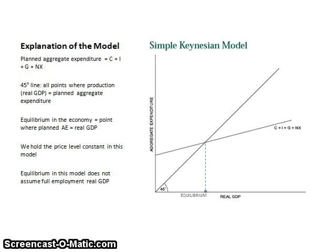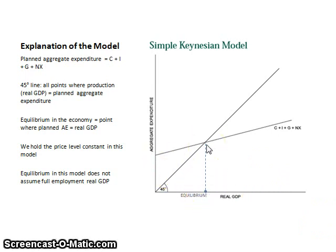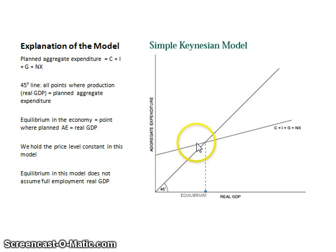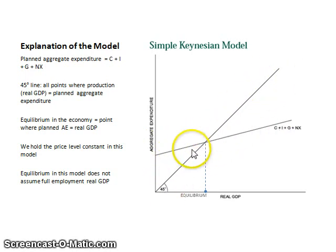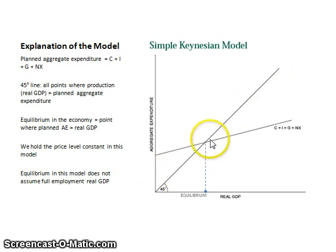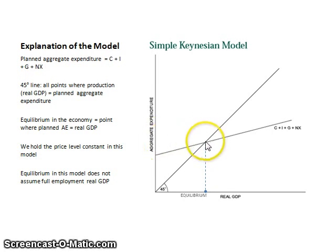The most important aspect of this simple Keynesian model is the idea of a Keynesian equilibrium, which occurs when our aggregate expenditure curve — the shallow line representing C plus I plus G plus NX — crosses our 45-degree line. This tells us that at that particular point, spending is exactly equal to output, and our economy is in equilibrium.